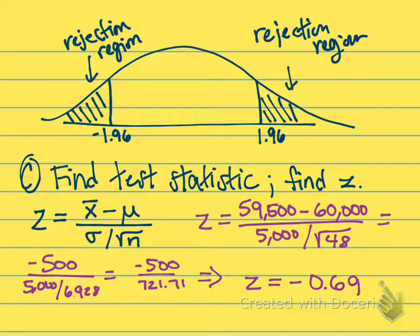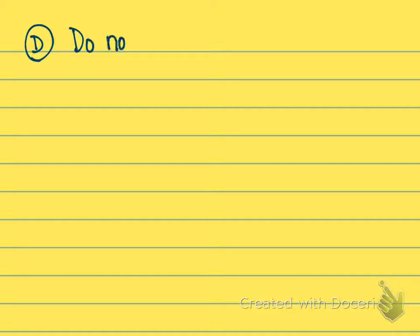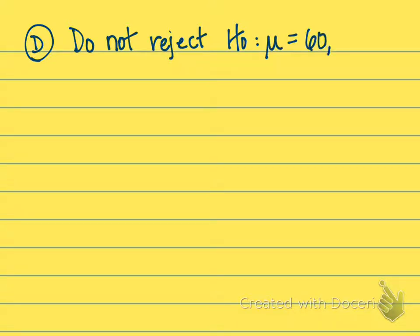So where would that fall — does it fall in a rejection region? It does not, because negative 0.69 is in between our critical values; it would fall somewhere in the middle of the distribution. It is not in the rejection region, which gives us the answer to part D. Part D asks what is your decision regarding the null hypothesis, and our decision is that we do not reject the null hypothesis that the population mean is going to average out to be 60,000 miles.